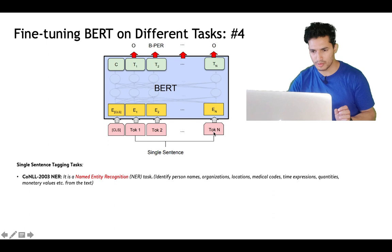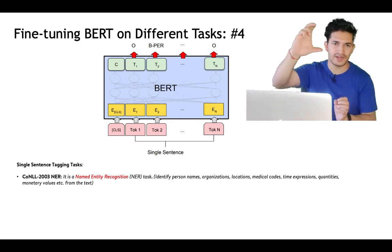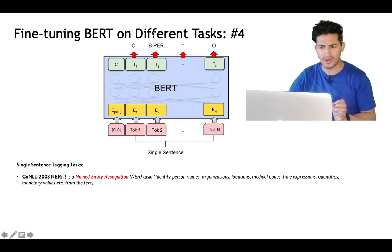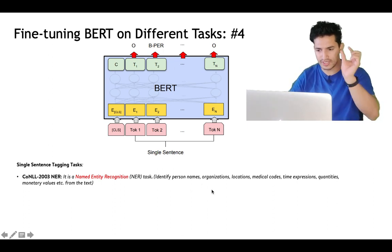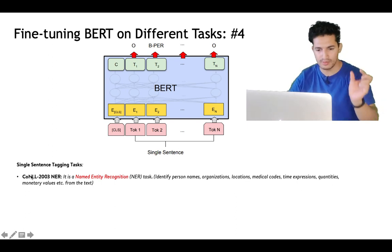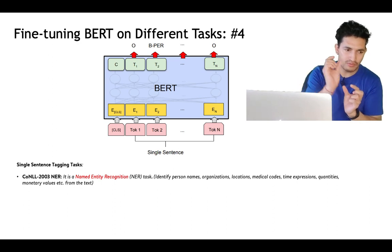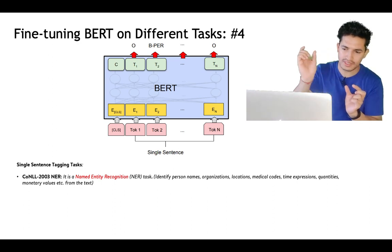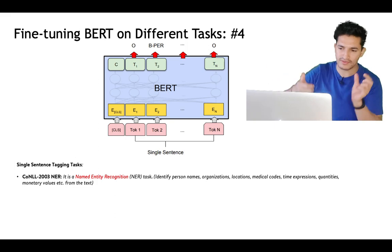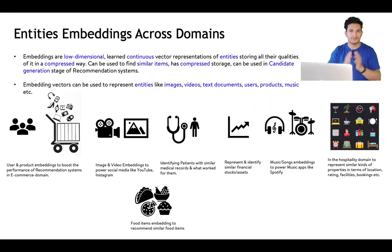Named Entity Recognition helps identify each word's significance in the sentence — whether it's an organization, person, and so on. Now we come to the second part of the video: how to use BERT to generate entity embeddings. These embeddings can be used across domains — hospitality for hotel/property embeddings, e-commerce for product embeddings, and many other examples.